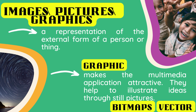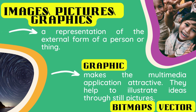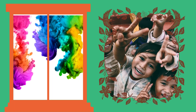When we say images, pictures, or graphics, it is a representation of the external form of a person or a thing. A graphic makes the multimedia application attractive. They help to illustrate ideas through still features — meaning they are not moving. There are two categories of graphics: bitmaps and vector. Bitmaps are paintings, while vectors are drawings. Graphics use all different colors, like this image of happy children with different colors.